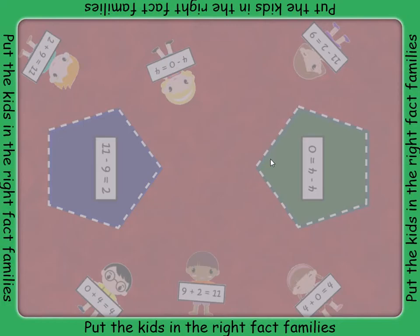Each kid is part of a fact family. Look at the fact given to you in the middle of the shape, and then find the missing facts held by the children. Drag each kid into the correct space to complete the fact family.